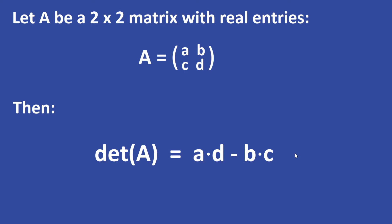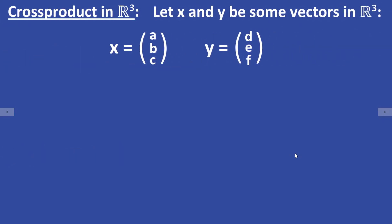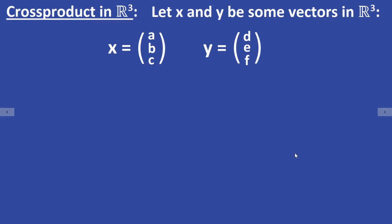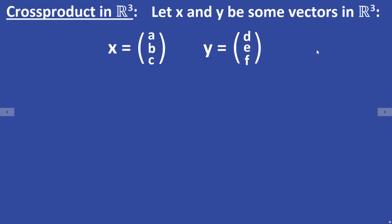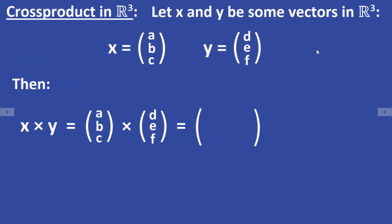I will now show you how the cross product of two vectors in R3 can be computed. Let X and Y be some vectors in R3. The vector X has entries A, B, and C. The vector Y has entries D, E, and F. The cross product of X and Y is another vector in R3, which can be computed the following way.